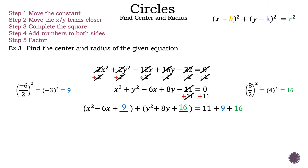Now let's factor the x quadratic — our result is the quantity of x minus 3 squared. Now let's factor the y quadratic — our result is the quantity of y plus 4 squared. Now let's add our constant terms: 11 plus 9 plus 16 is 36. Now we have the quantity of x minus 3 squared plus the quantity of y plus 4 squared is equal to 36.